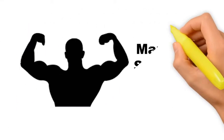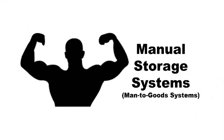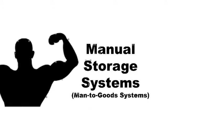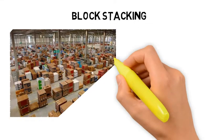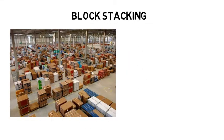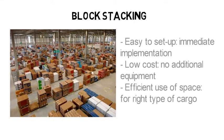Now let's look at manual storage systems or man-to-goods systems. Block stacking is the simplest and cheapest possible manual storage system. It is easy to set up — once you've got the warehouse space, you can implement block stacking immediately. It is low cost as no additional equipment is required. All that's required is perhaps some line markings on the floor or signage for more orderly storage. Overall, it is quite efficient use of space.